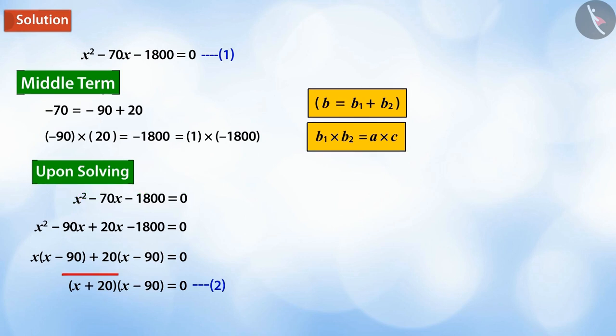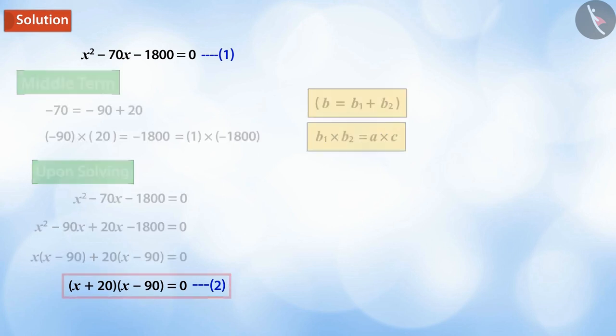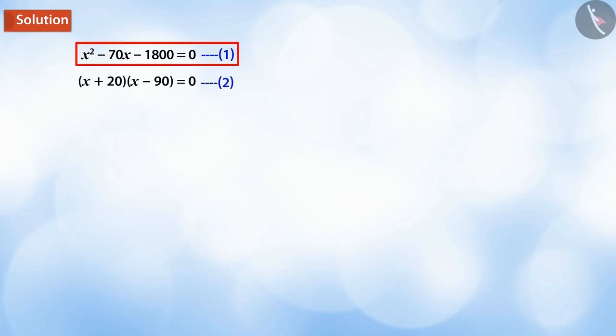We can write equation 2 as a product of its factors: (x + 20)(x - 90) = 0. On solving further, we equate each of the linear factors to zero, which gives us x + 20 = 0 or x - 90 = 0, that is x = -20 or x = 90.